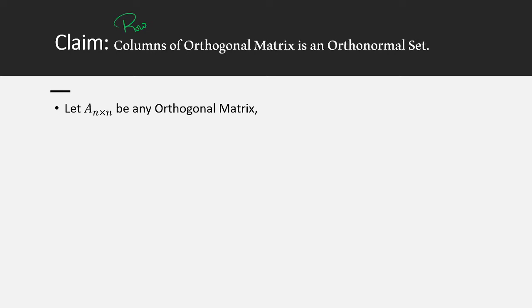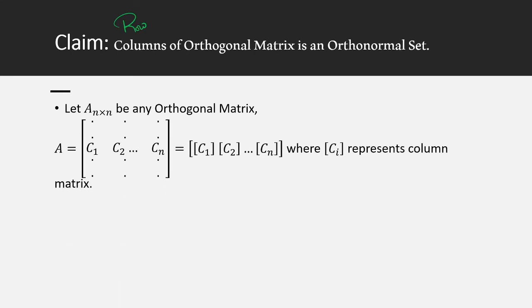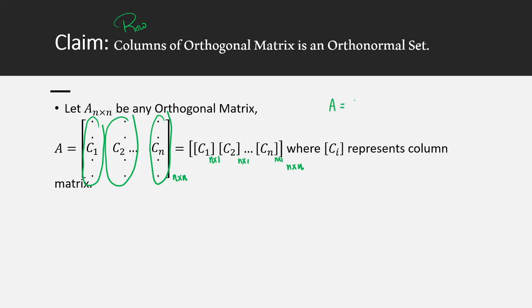I want to talk about the columns of this matrix. So let A be the matrix with first column denoted C1, second column C2, and so on, with the last column being Cn. So it is an n×n matrix. C1 is a column matrix with n rows and 1 column, and together all columns make the n×n matrix A. So A looks like [C1 | C2 | ... | Cn]. Students should not get confused — C1, C2, etc. are not elements of the matrix; they are the full columns.